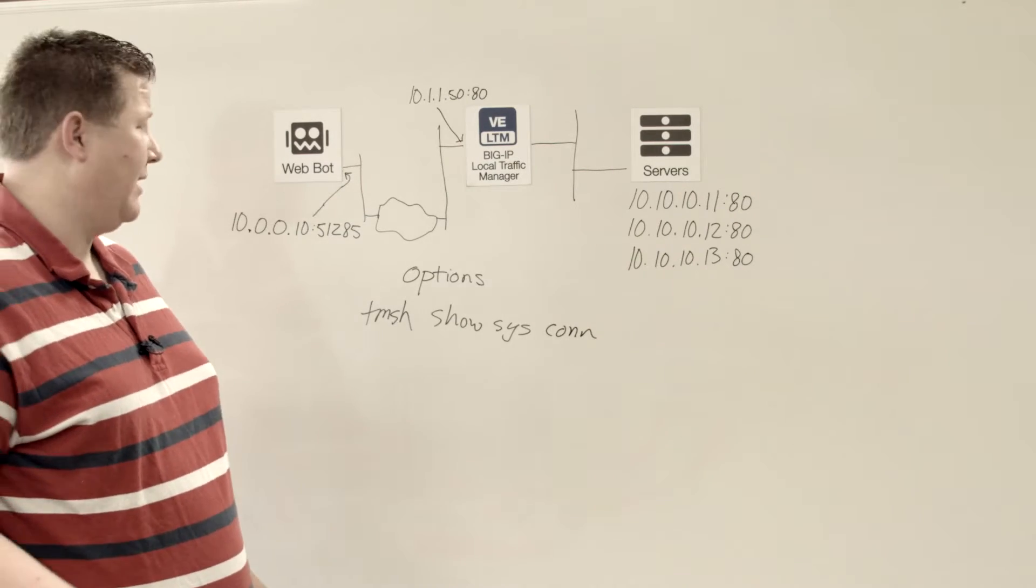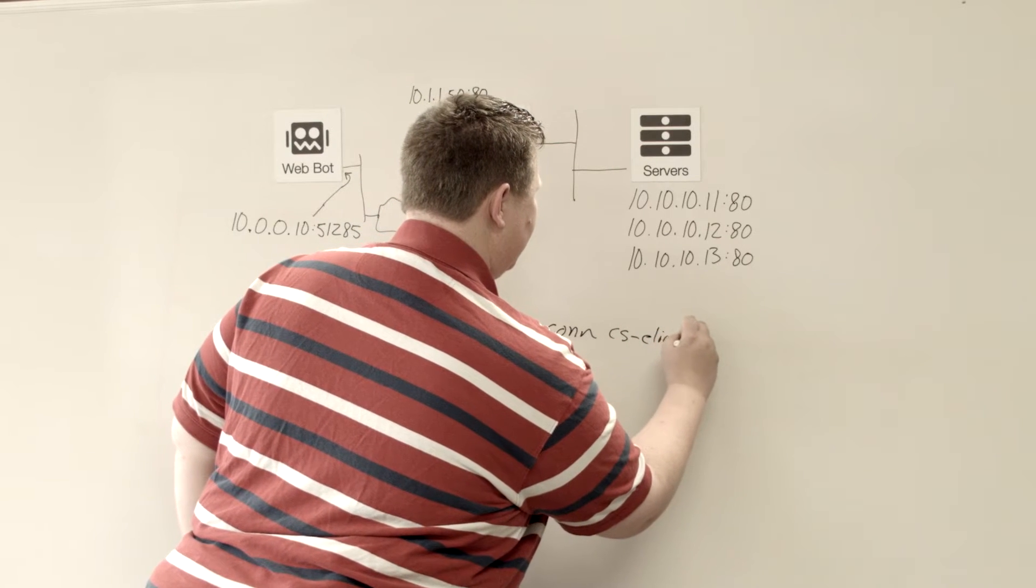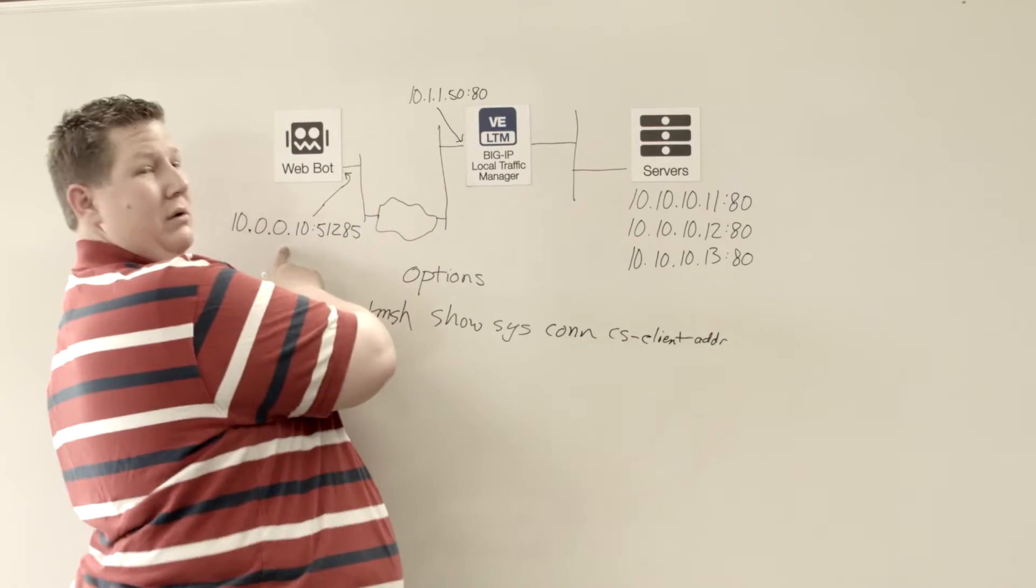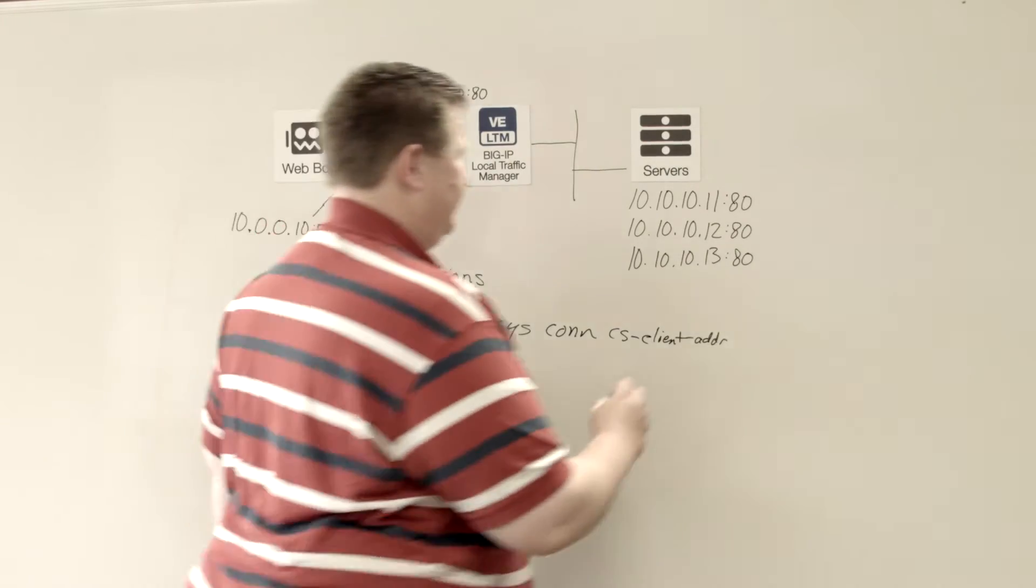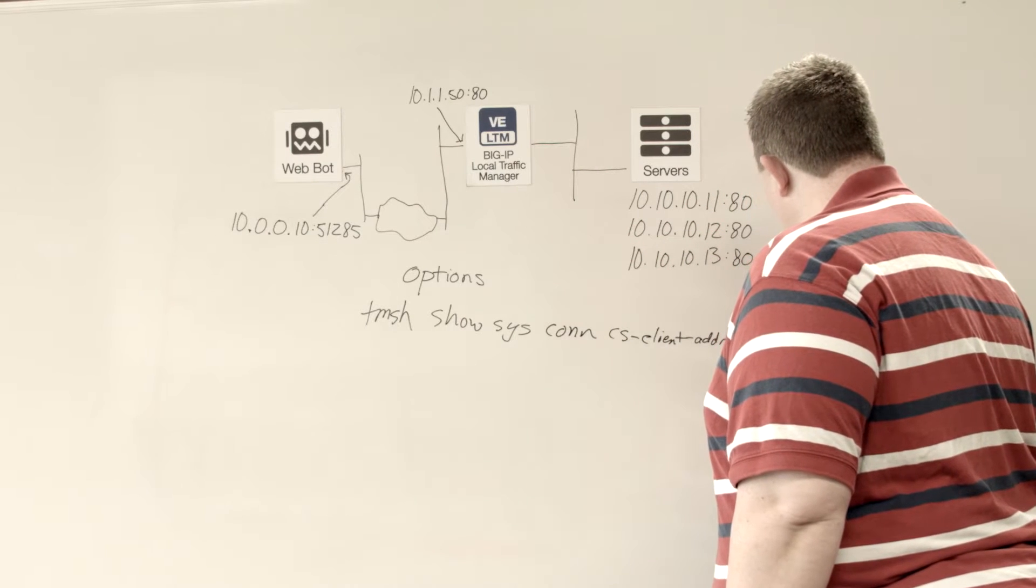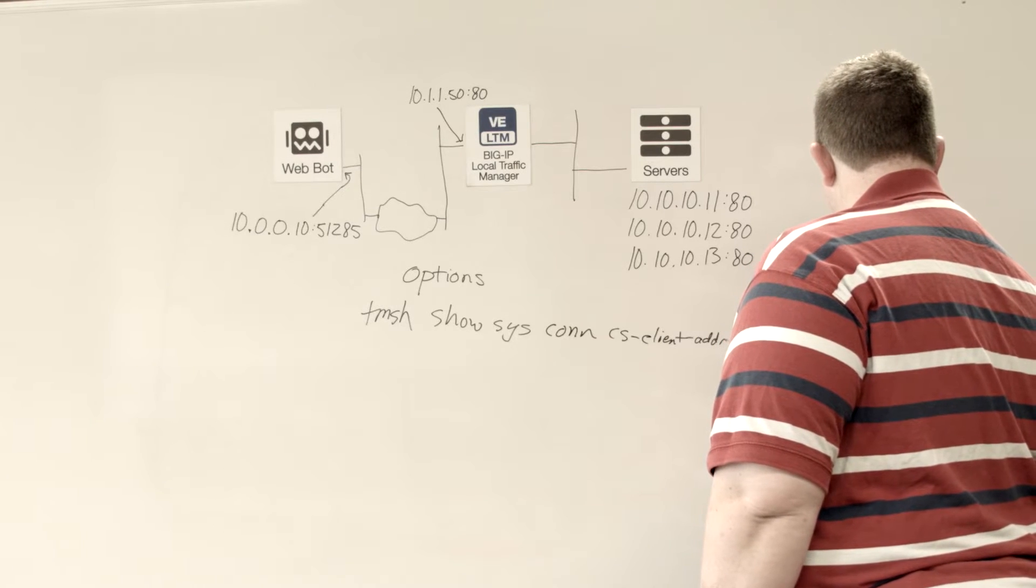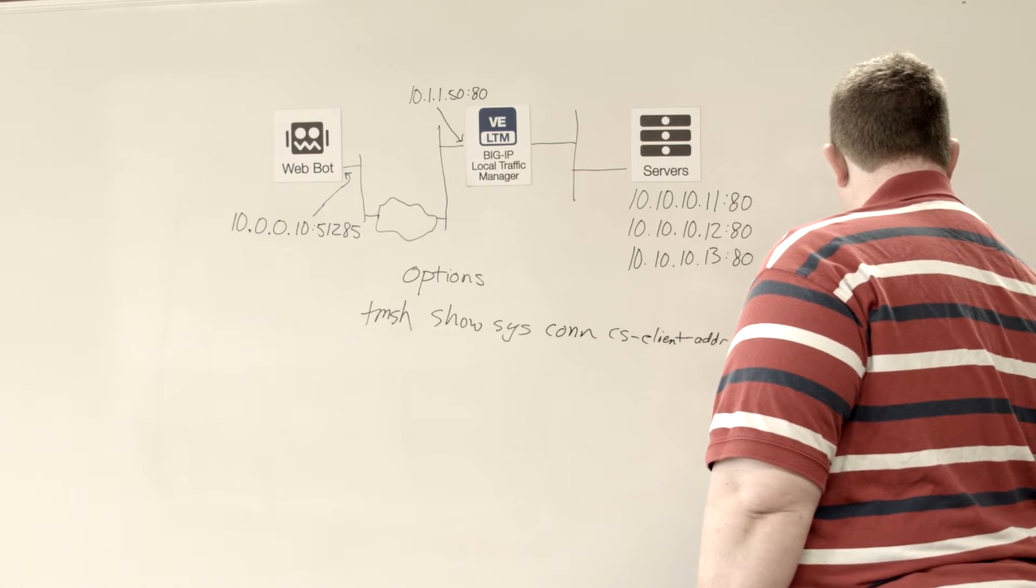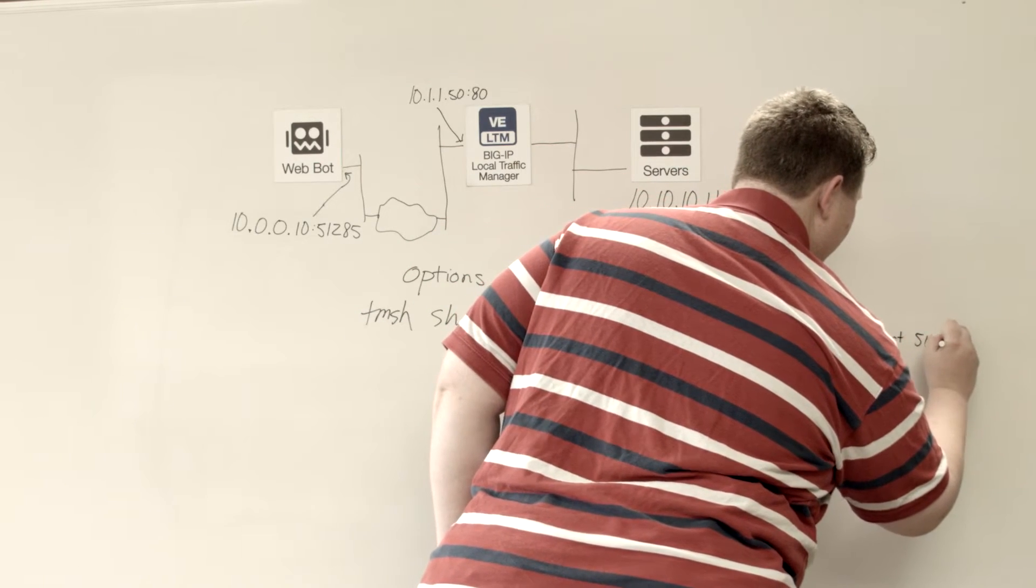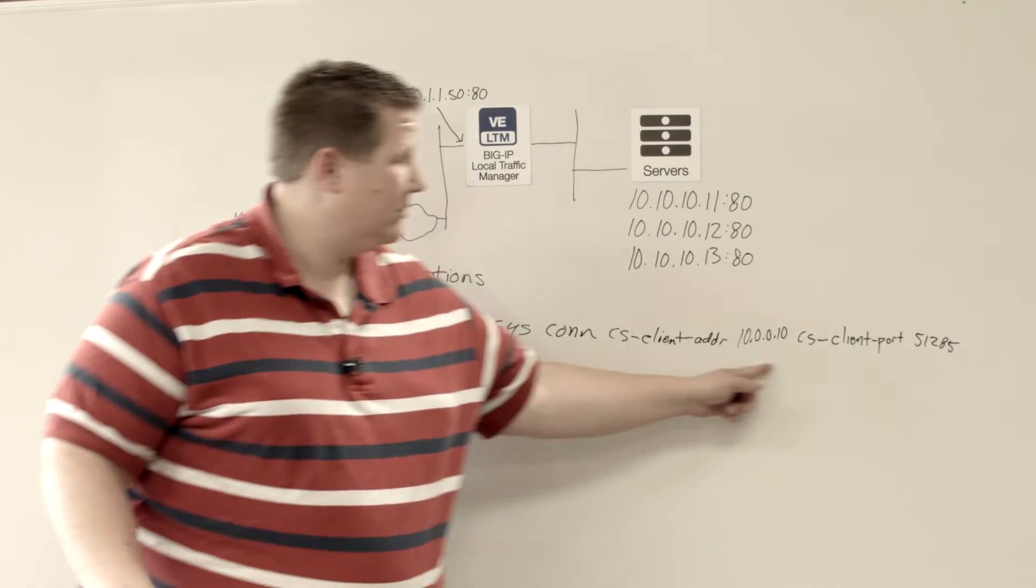On tmsh command line, I would then do client side, client address of 10.0.0.10. Come to the other side. And then the client side, client port of 51285. And so when I do that, I've got this big long command line.